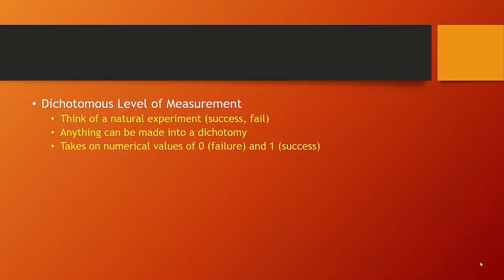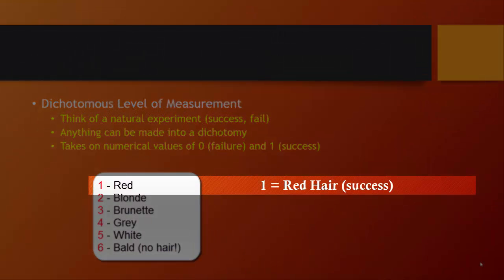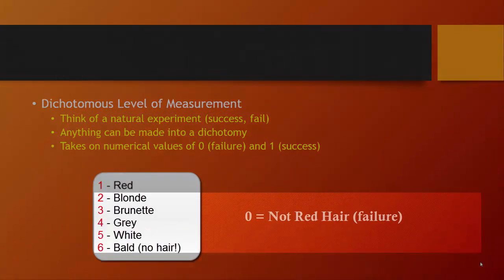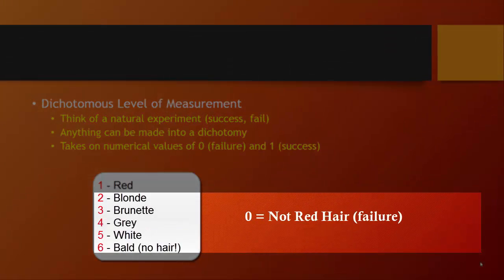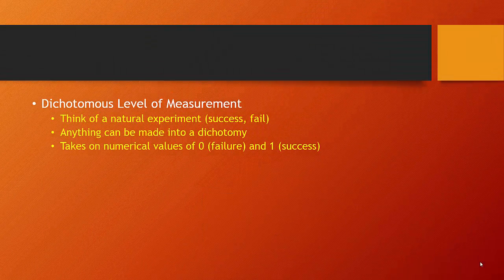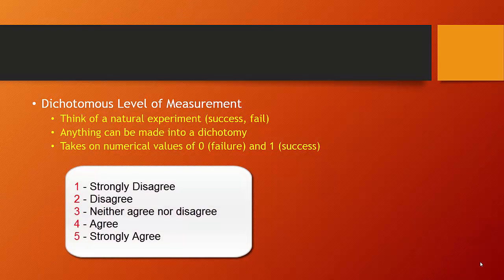At the dichotomous level of measurement, the special level of measurement, I want you to think of it as a natural experiment that has a success condition and a fail condition. You can make anything into a dichotomy regardless of the underlying property of the level of measurement. For example, you can take a nominal level variable like hair color and you can code it according to whether a property is present or absent. Does someone have red hair or do they not have red hair?